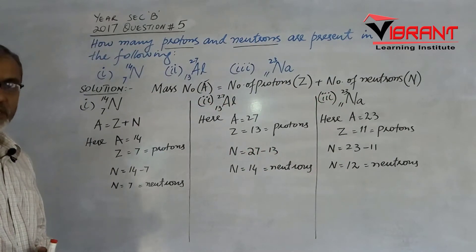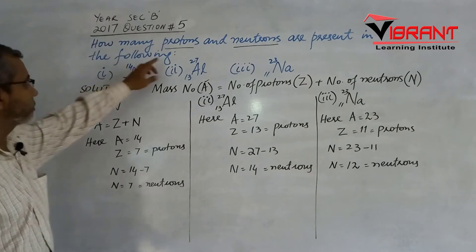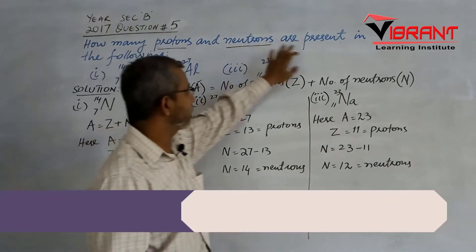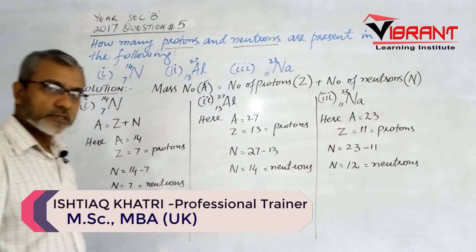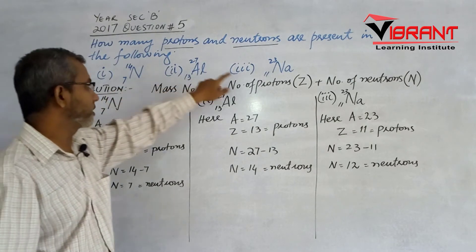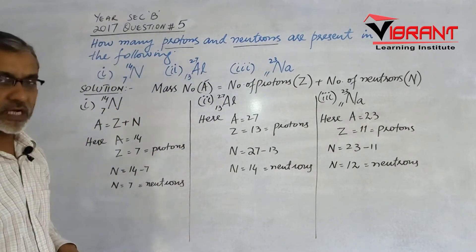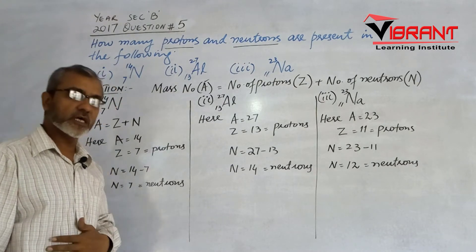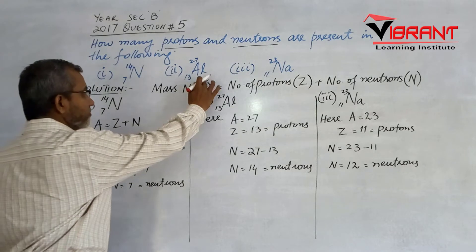Question number five, year 2017 section B: How many protons and neutrons are present in the following? We know that the mass number is the number of protons plus the number of neutrons.